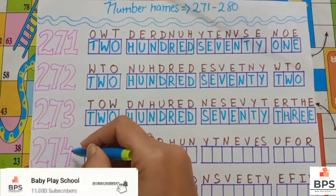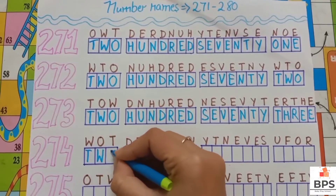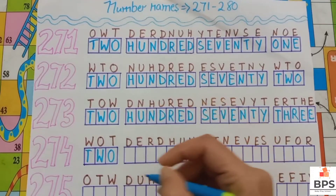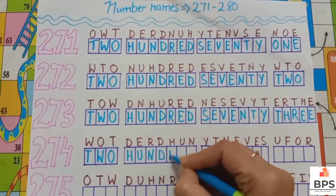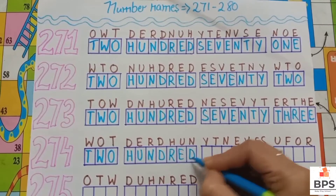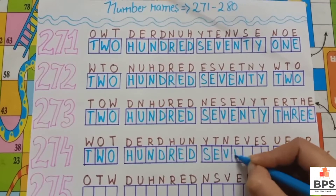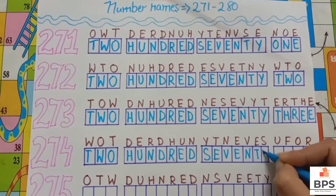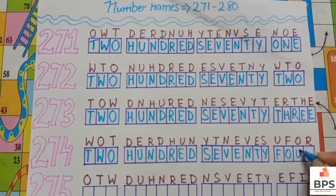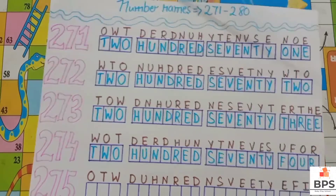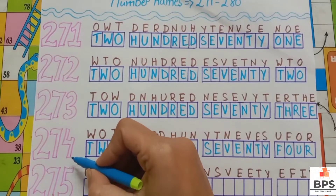274: T, W, O, 2, H, U, N, D, R, E, D, 100, S, E, V, E, N, T, Y, 70, F, O, U, R, 4. 274.